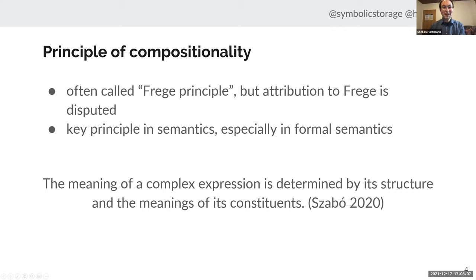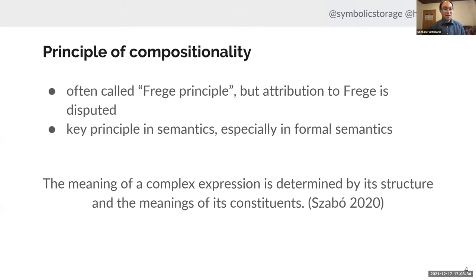The principle of compositionality is often called the Frege principle, but the attribution to Frege is disputed. Some say there's something like the compositionality principle underlying Frege's thoughts; others say there's nothing remotely like it there, and it was actually Carnap who later attributed it to Frege. Regardless, it's a key principle in semantics, especially adopted in formal semantics, and can be summarized as: the meaning of a complex expression is determined by its structure and the meanings of its constituents.